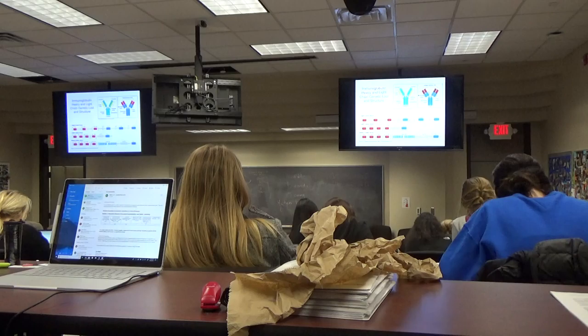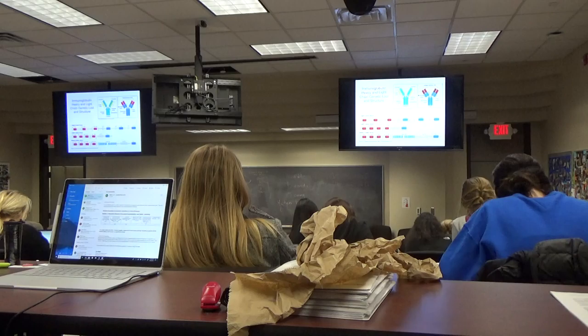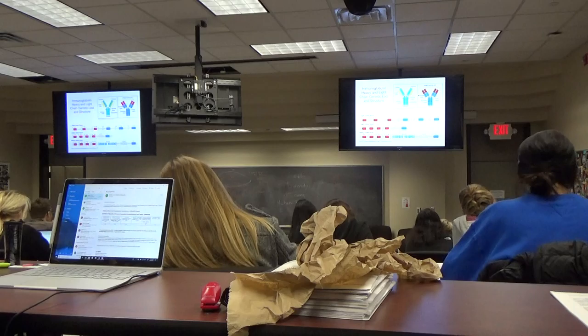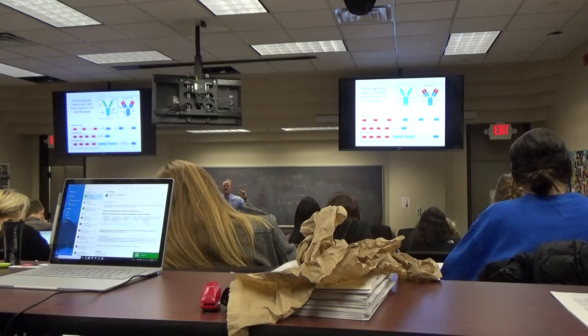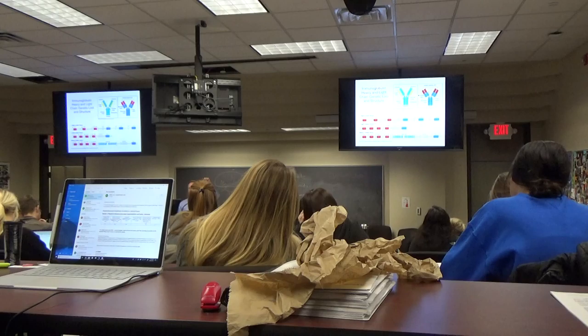We're going to have varying numbers of V, varying numbers of D and J. We're not going to have diversity in the light chain. So the heavy chain will have V, D, and J. The light chain will only have V and J for our purposes.